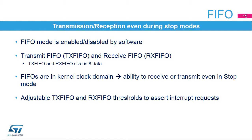The LPUART can operate in FIFO mode, which is enabled and disabled by software and is disabled by default. It comes with a transmit FIFO called TXFIFO and a receive FIFO called RXFIFO, each being eight data deep. The TXFIFO is 9 bits wide. The RXFIFO default width is 12 bits, due to the fact that the receiver stores not only the data but also error flags associated to each character, like parity error, noise error, and framing error flags.